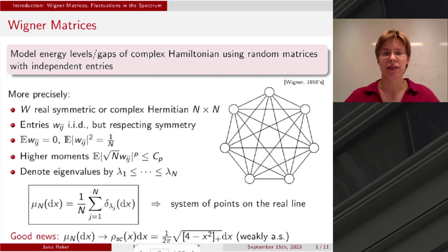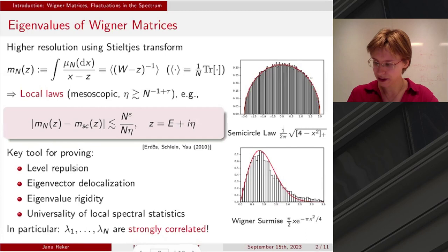Which is the random probability measure that assigns the mass of 1 over N to each of the N eigenvalues. And then there's already some good news back from Wigner's time, namely that this random probability measure converges as the matrix size goes to infinity, weakly, almost surely, to a deterministic one, which we call the Wigner semicircle law. And for the remainder of the presentation, I want to think of this as a law of large numbers type result, which kind of lives on the scale of all eigenvalues, so on some global scale.